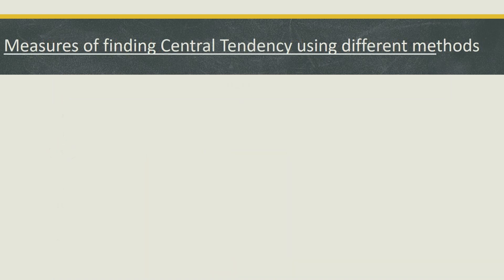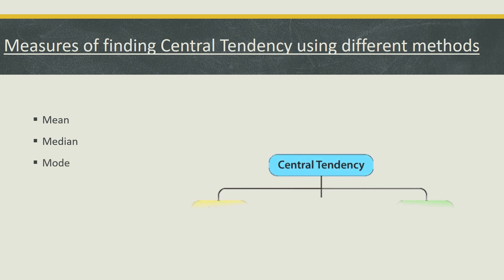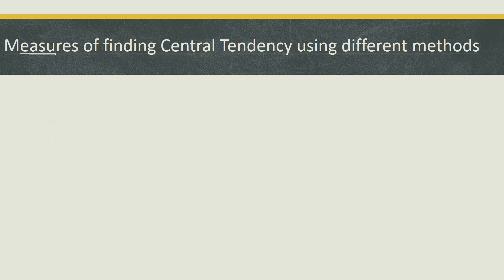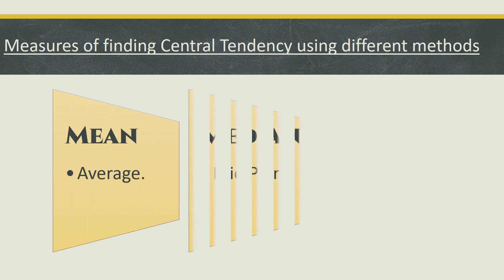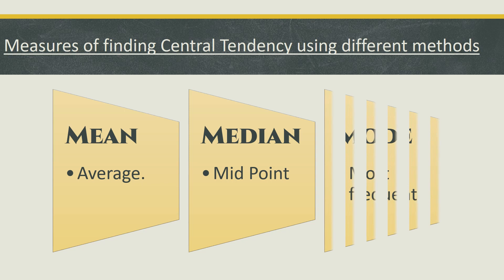Measures of finding central tendency can be done using different methods: you can use mean, median, or mode. Mean basically means average, median means midpoint, and mode is the most frequent number.